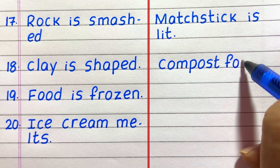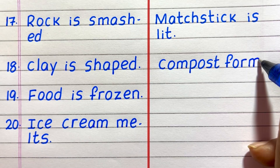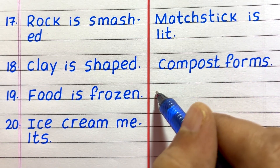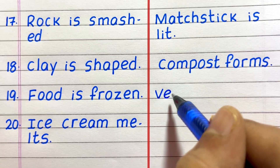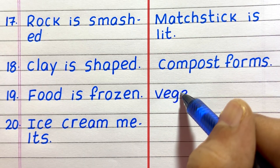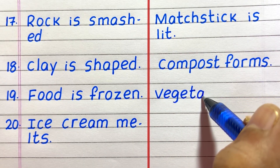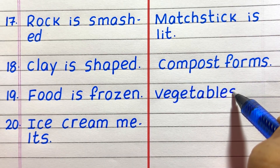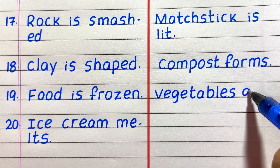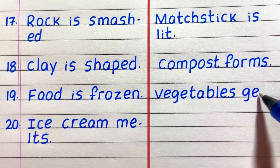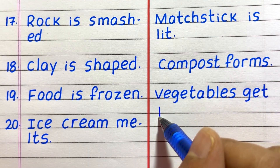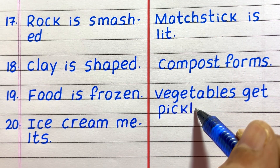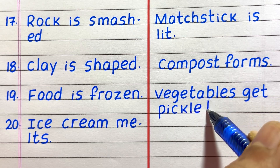Eighteenth example of a chemical change is compost forms. Nineteenth, vegetables get pickled.